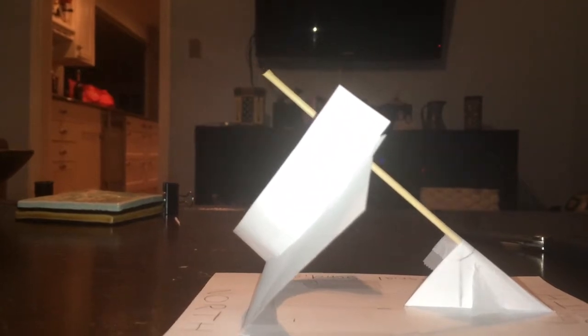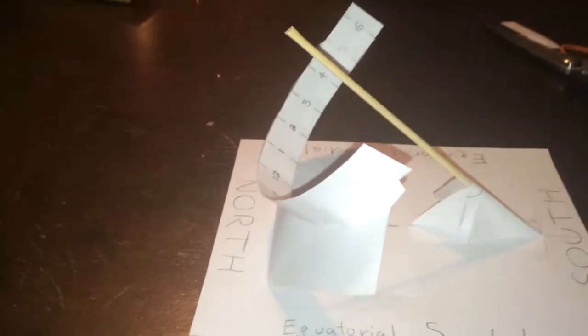As the position of the sun relative to the sundial changes, the shadow of the Nomen can be tracked on the semicircular band with the numbers. You can probably see the shadow right behind the Nomen here, moving along the band.